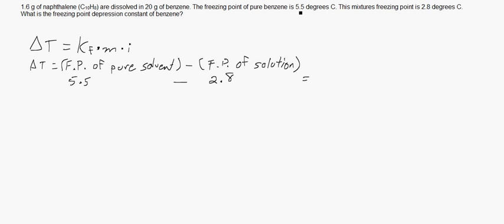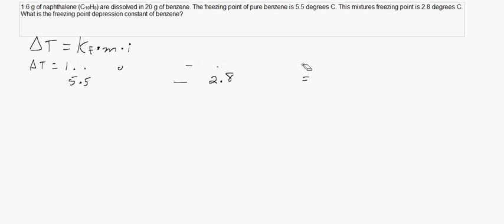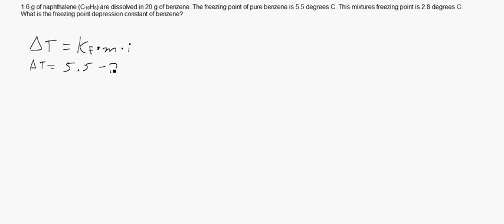And that's because your pure benzene has a freezing point of 5.5, and the mixture we find has a freezing point of 2.8. So, the 5.5 minus 2.8, and we subtract those two, that gives you 2.7 degrees C.